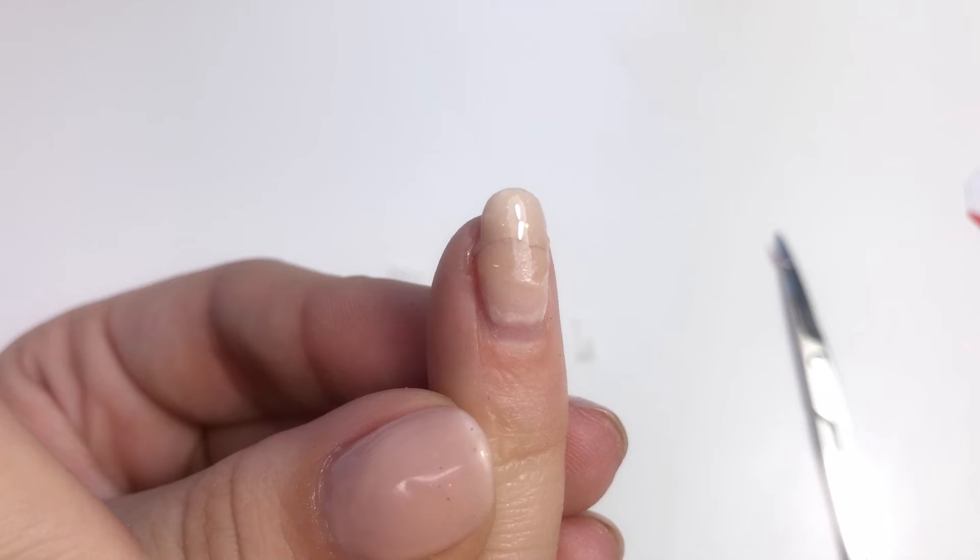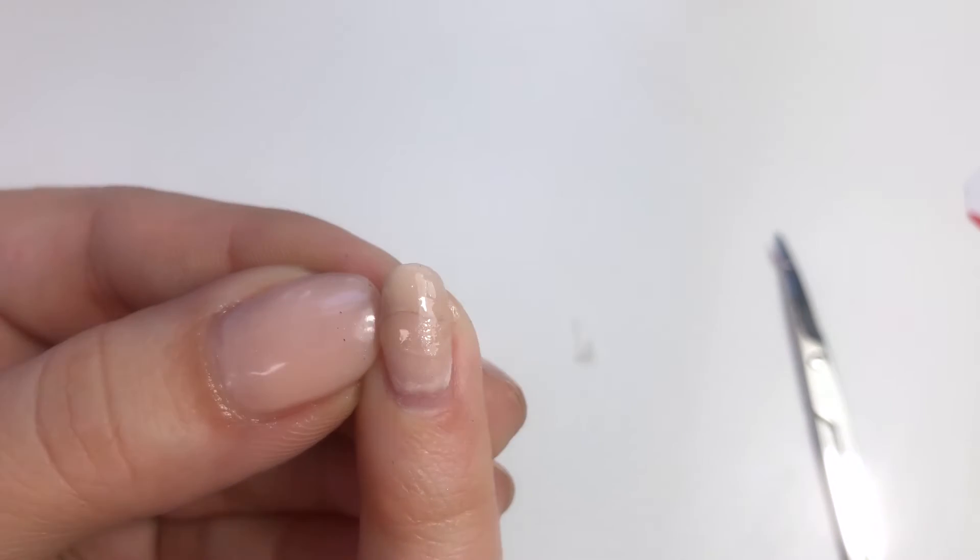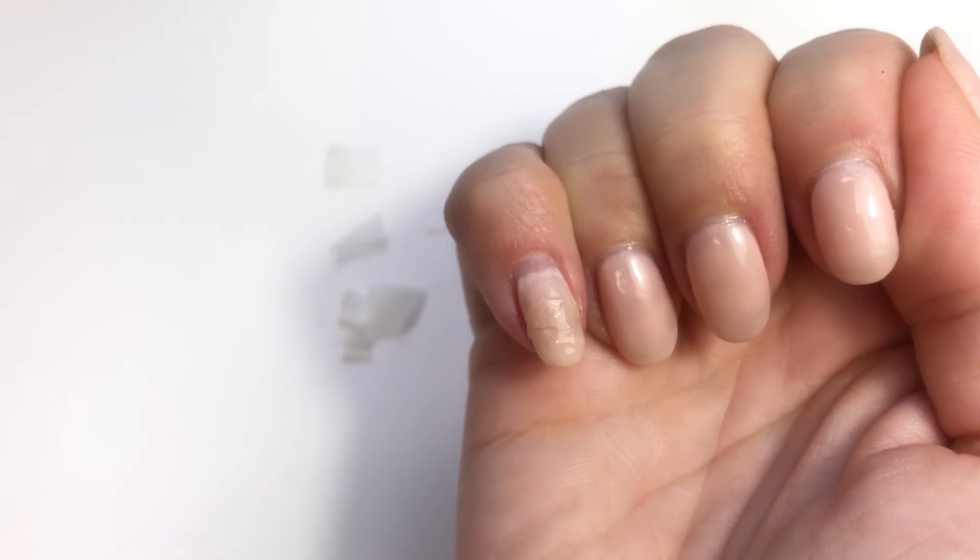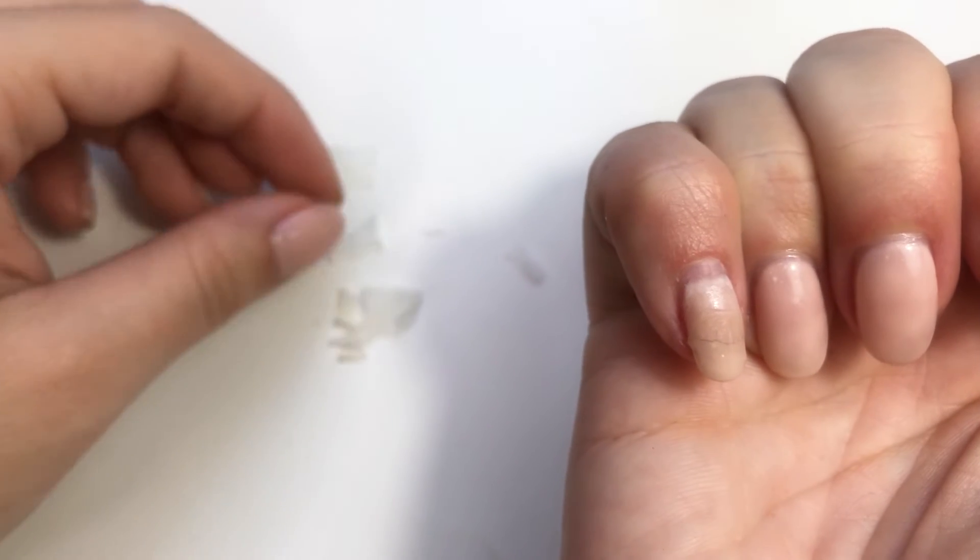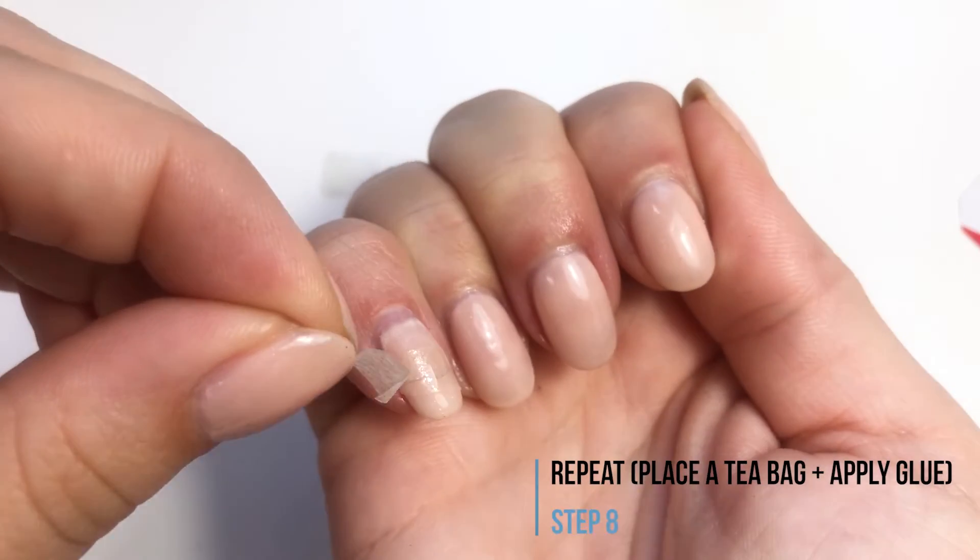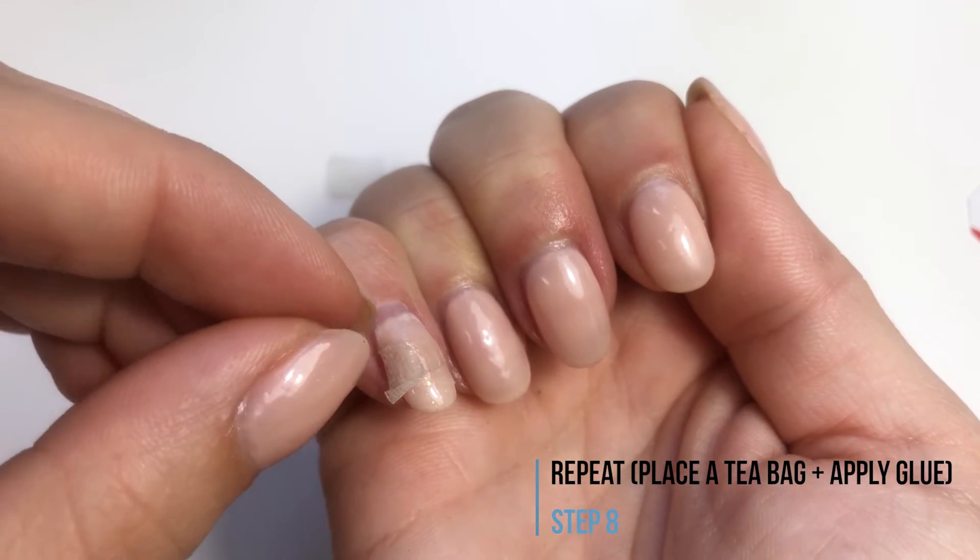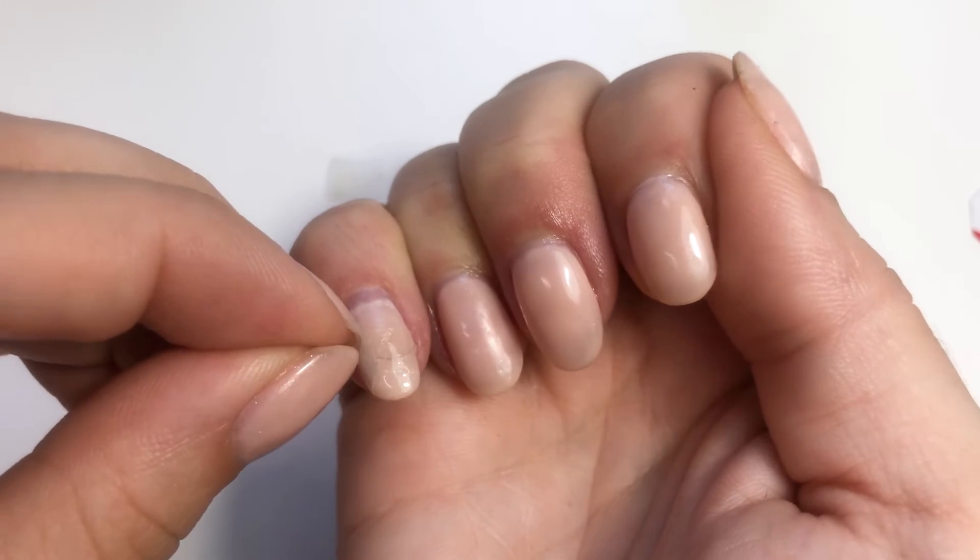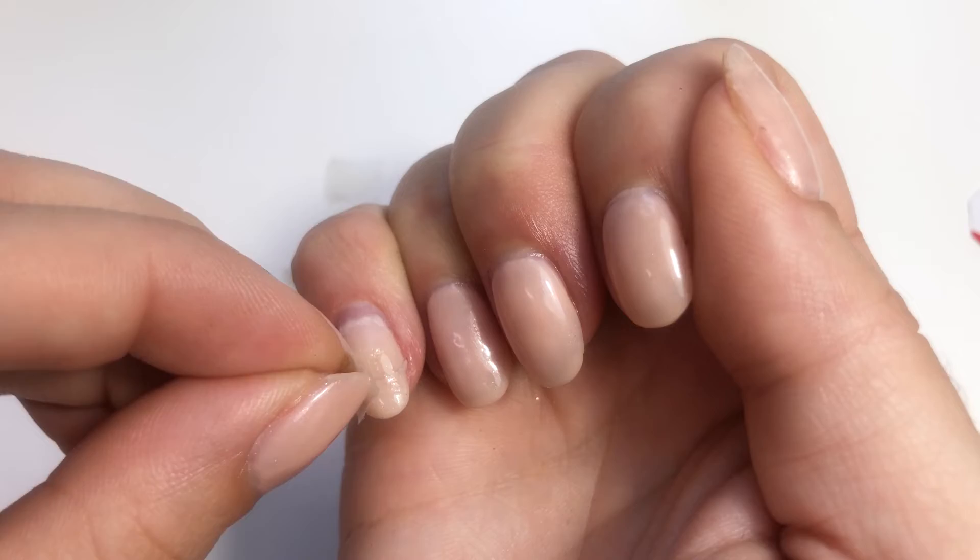Make sure that the glue is not touching your skin or if it is wipe it off. Before the glue is completely dry apply another layer of the teabag. Try to cover a different area this time. So with the last piece we were doing a horizontal stick whereas this time we're gonna do a vertical one.